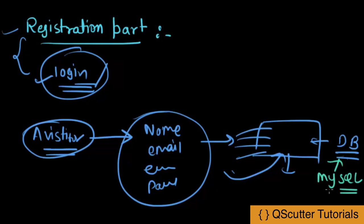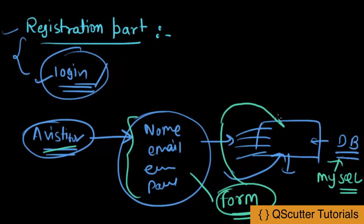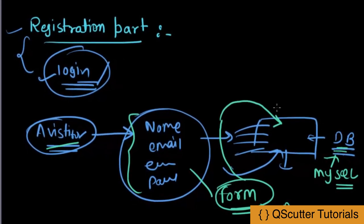You have the user and all their information. You have to collect it through an HTML form. Then, using PHP, you need to write all this information into the database. You make a connection with the database and then write this data into it.